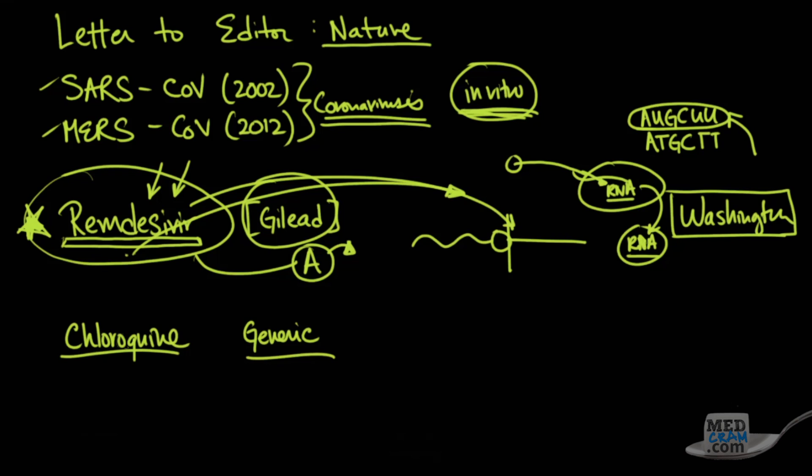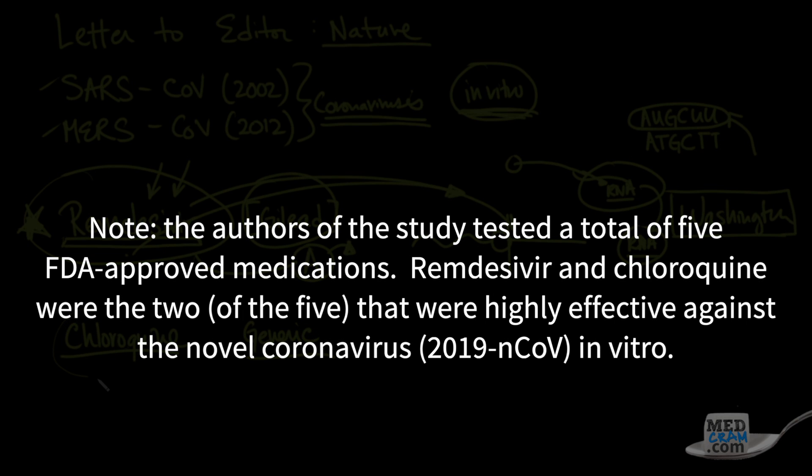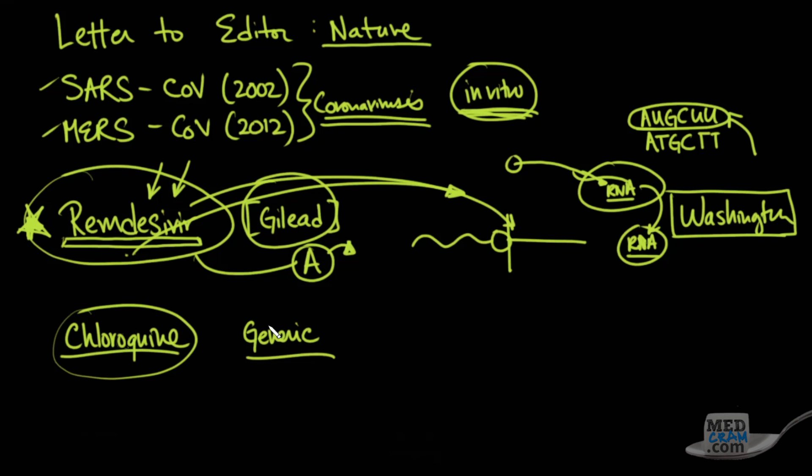So the other drug that they looked at in the same letter to the editor in that study was chloroquine. Now, chloroquine has been around for a very long time. It's a generic medication. It's been used in malaria for years, in fact, so much so that you actually have chloroquine-resistant areas. They also found that this worked really well as well. So how does that work?